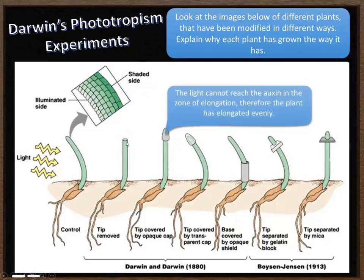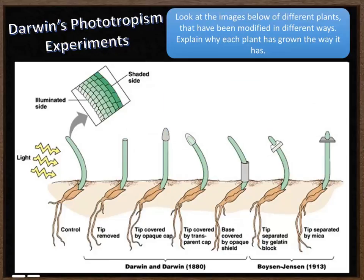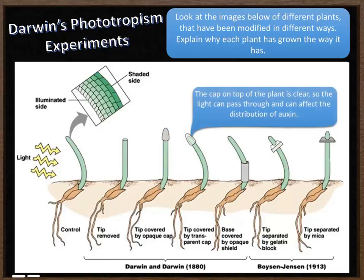The next one has had the tip covered with an opaque cap. Therefore light hasn't reached the zone of elongation, auxin has been evenly distributed, and the plant has experienced elongation evenly. The next one has a clear cap — transparent, meaning light can pass through it — placed on top of the plant. Because light can reach the tip, auxin can be destroyed on the light side and remain on the shaded side, therefore the plant has grown towards the sun.